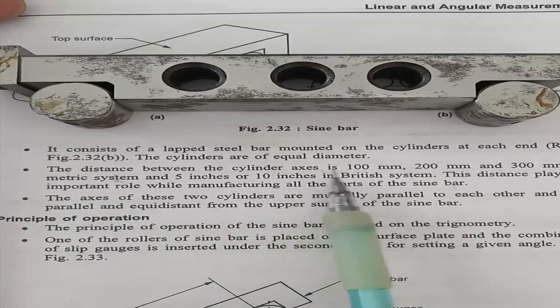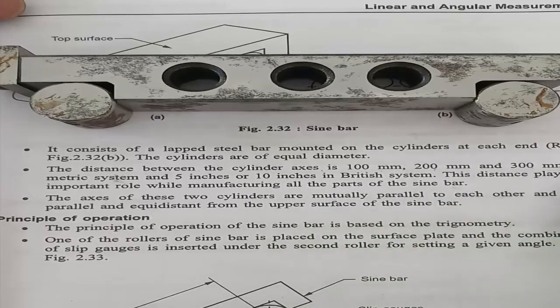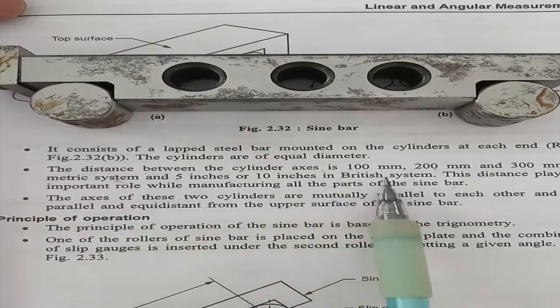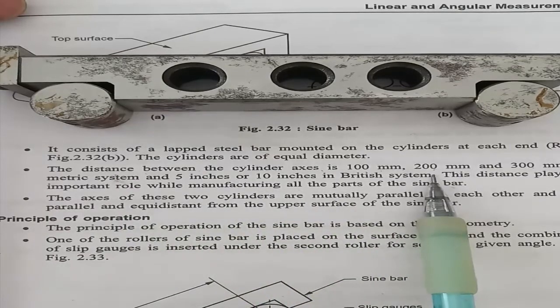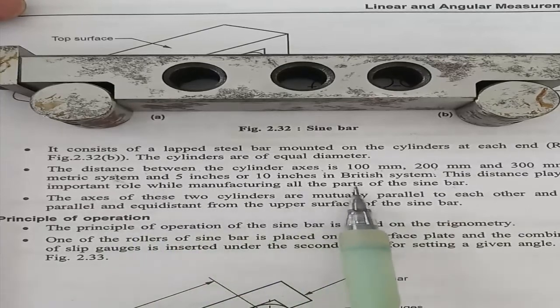The distance between cylinder axes are 100 mm, 200 mm, or 300 mm in the metric system, and 5 inches or 10 inches in the British system. This distance plays an important role while manufacturing all parts of the sine bar.